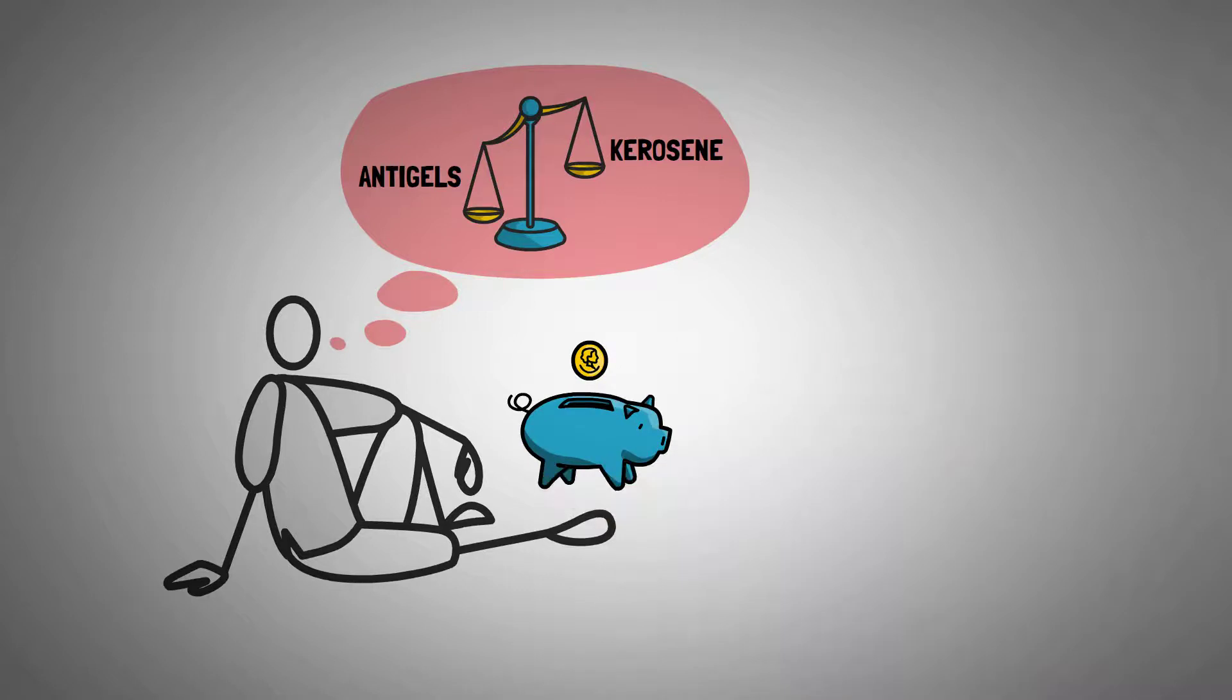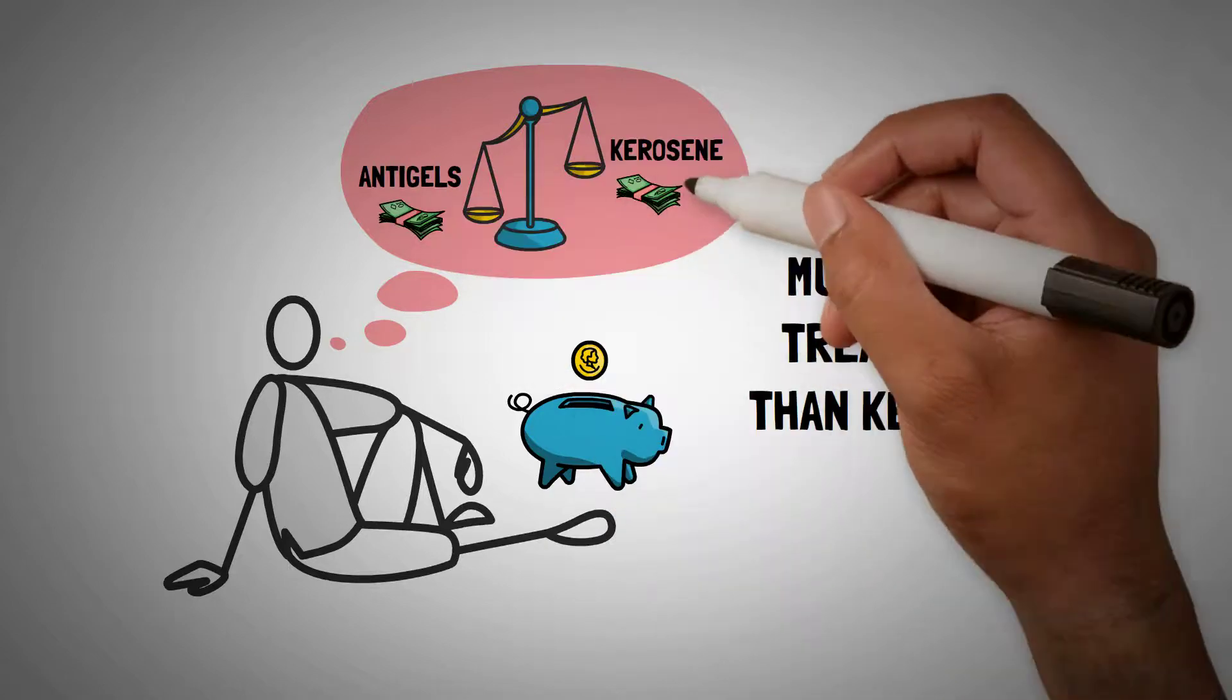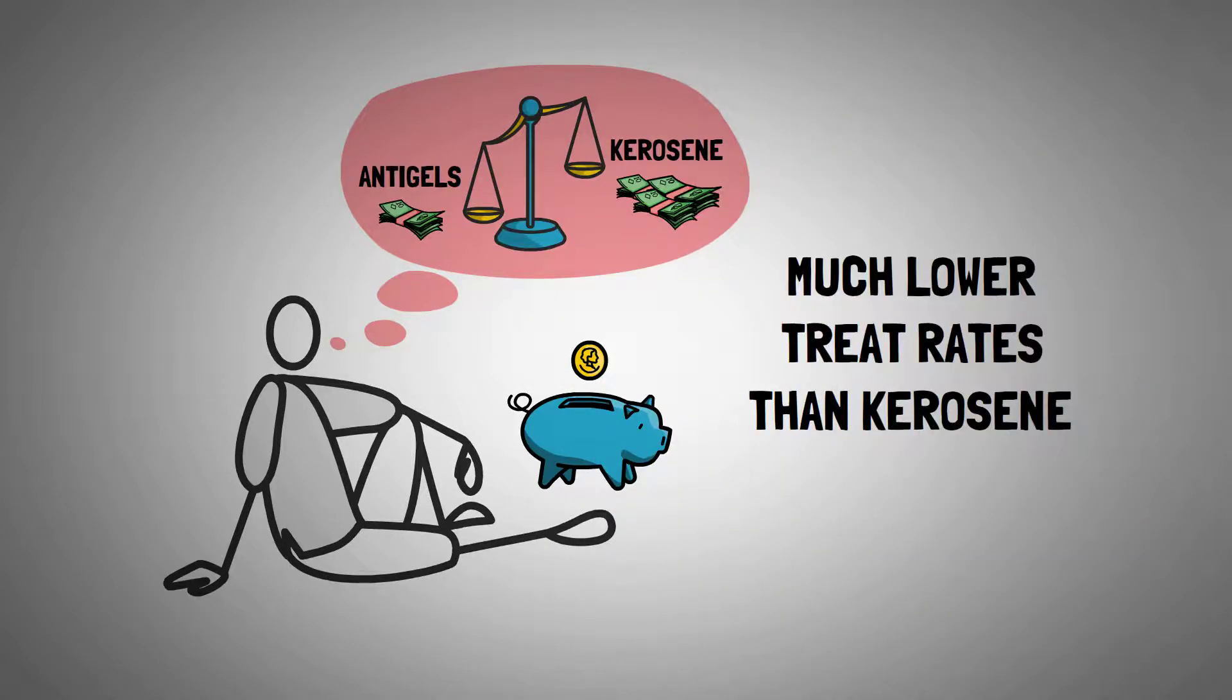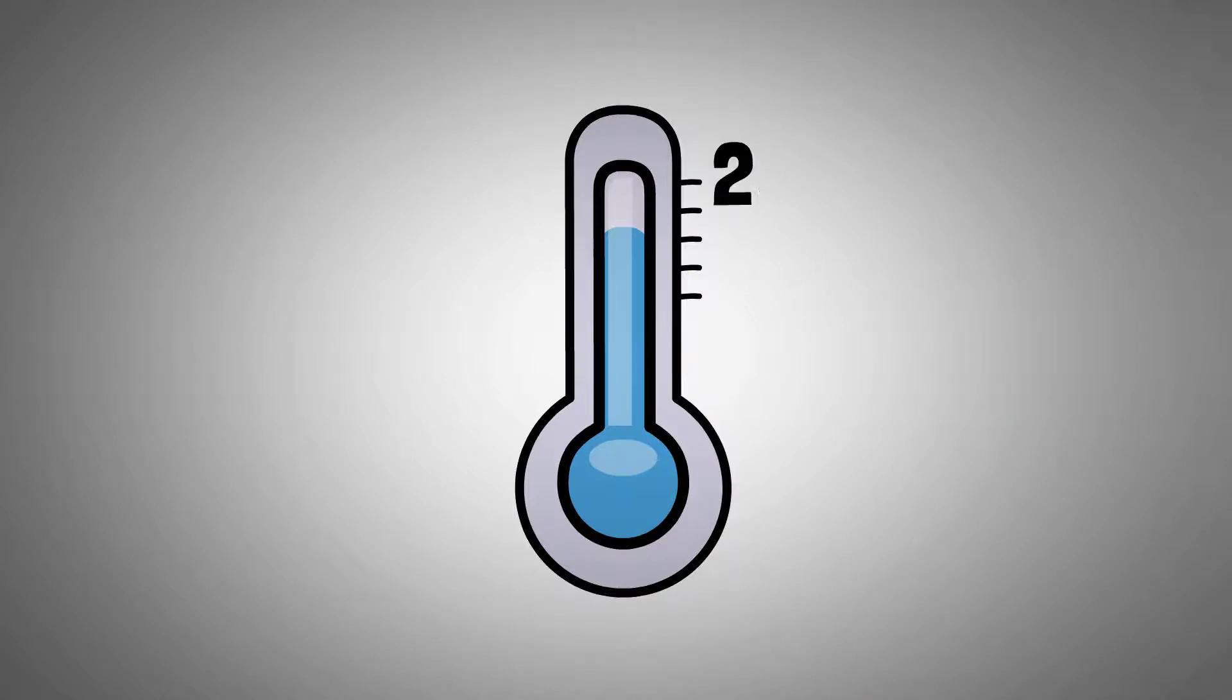Because anti-gels work at much lower treat rates than kerosene, they typically cost a lot less than kerosene to use. To drop your fuel's plug-point temperature down from 20 degrees to 0 degrees Fahrenheit, for example,